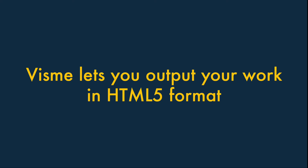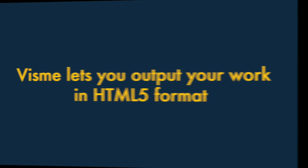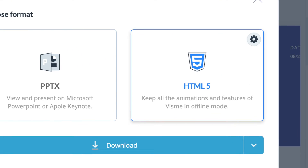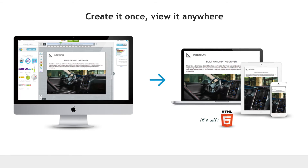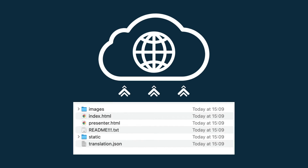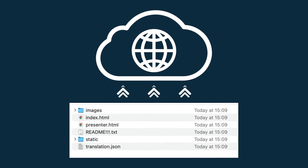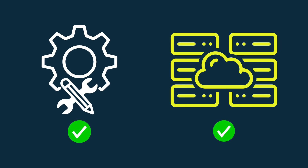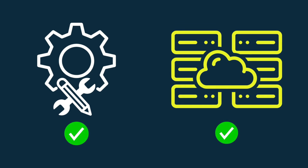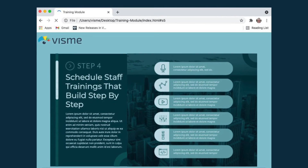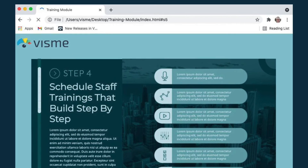Number two: Visme lets you output your work in HTML5 format. Unlike Canva, Visme lets you output your designs in HTML5 format, which technically lets you turn a design into a website and gives you the files you need to upload it to a hosting service. Creating a website from a Visme design will require some technical skills and server space, but if you have both, you'll be able to use Visme to create some quite sophisticated web content.